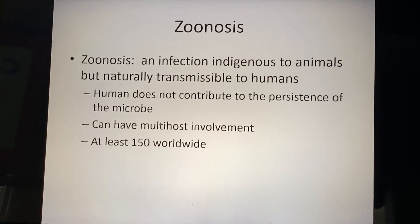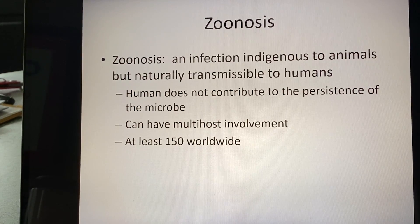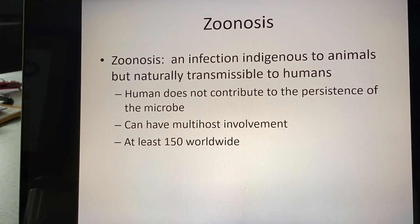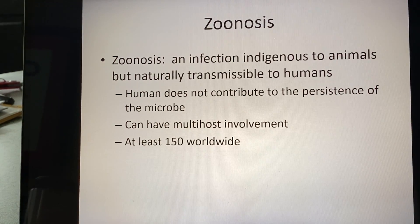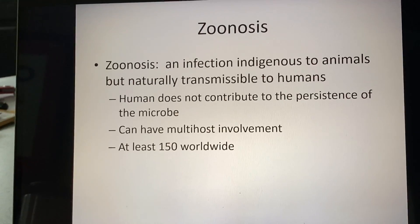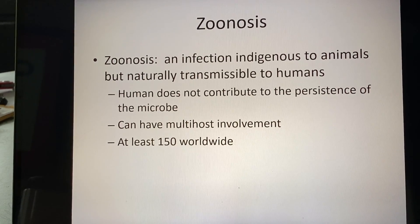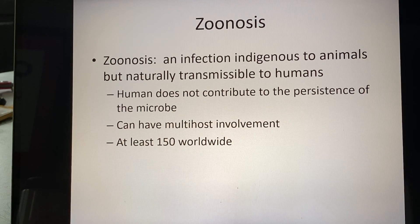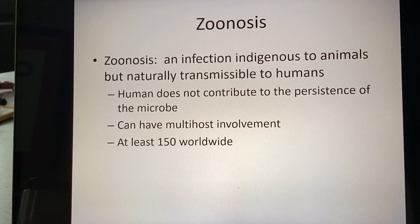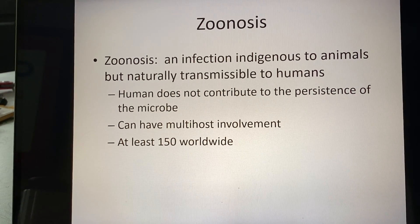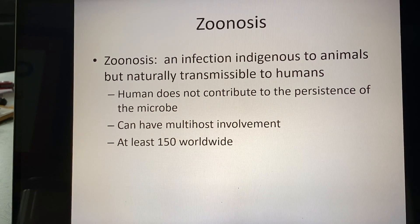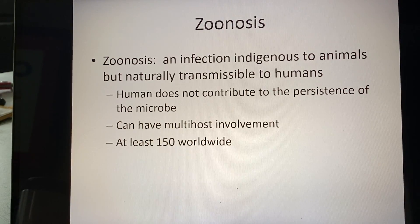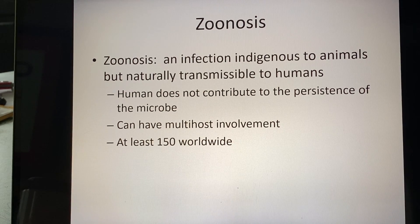A zoonosis is an infection that is indigenous to animals — meant to occur in animals and stay there — but is naturally transmissible to humans. There are about 150 worldwide. COVID-19 fits here too, though the virus had to undergo a mutation to allow it to cross over into humans. That doesn't always have to happen; it can be the exact same organism. A lot of times the human ends up being the terminal host of the microbe, and infecting a human doesn't do the microbe any good in terms of reproduction and spread.